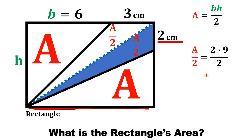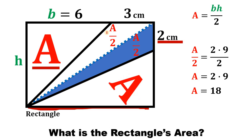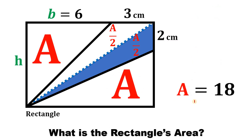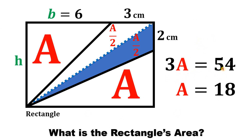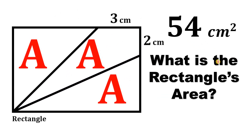If we multiply both sides by two, we get A equals two times nine. Two times nine equals 18. We've found the value of A, which is the area of one-third of this rectangle. Therefore, if we multiply this value by three, we get the area of the whole rectangle. So 3A equals 54, because three times 18 is 54. Therefore, the area of the rectangle equals 54 square centimeters.